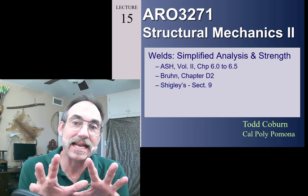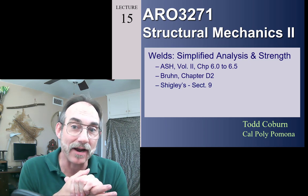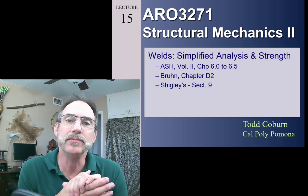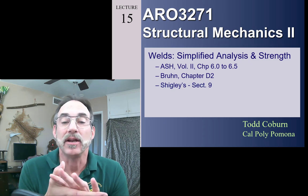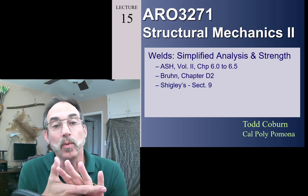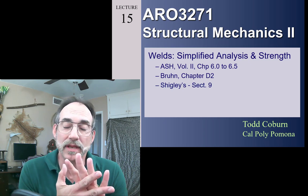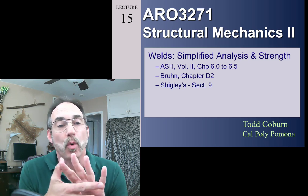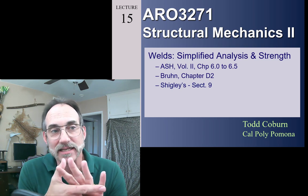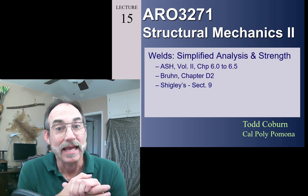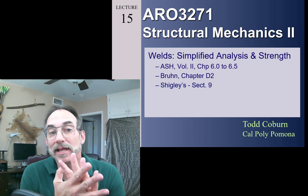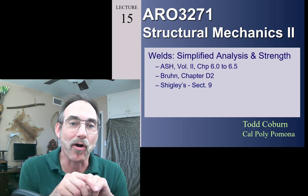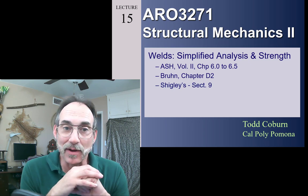We've already seen how to analyze a weld pattern when we have an eccentric load or a non-eccentric load. We learned that in order to evaluate an eccentric load, we're going to calculate the torsional properties of the weld pattern — basically a TR over J kind of calculation.